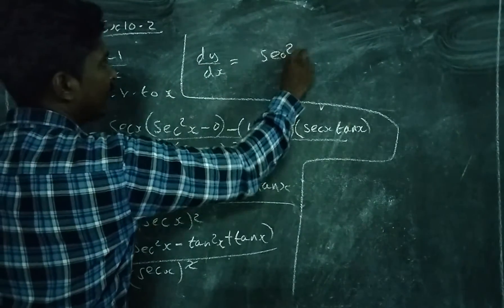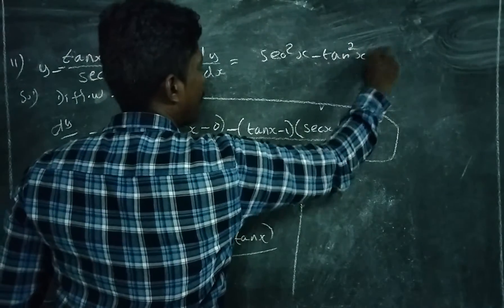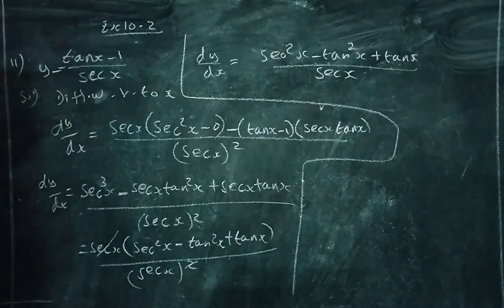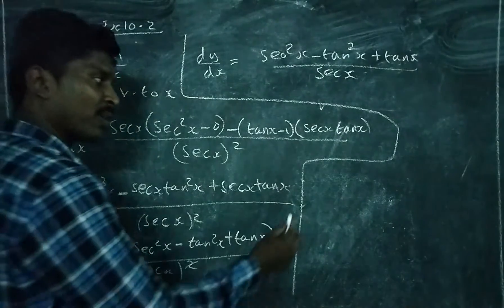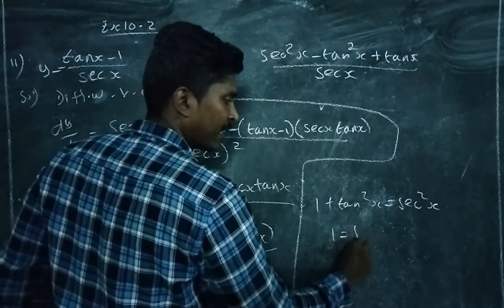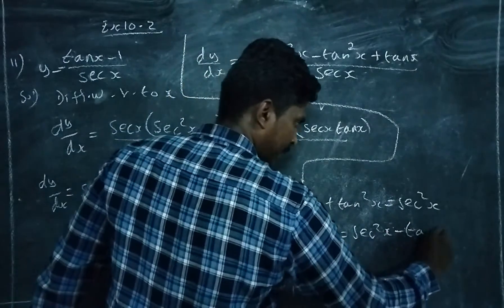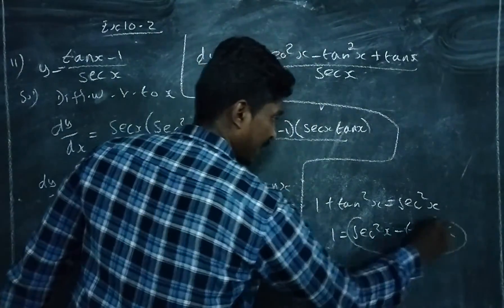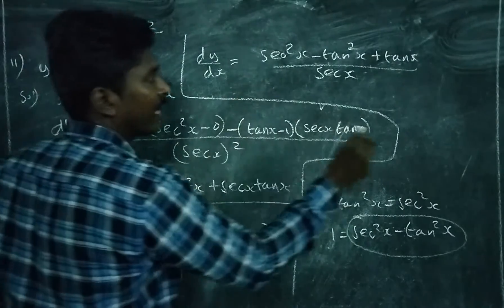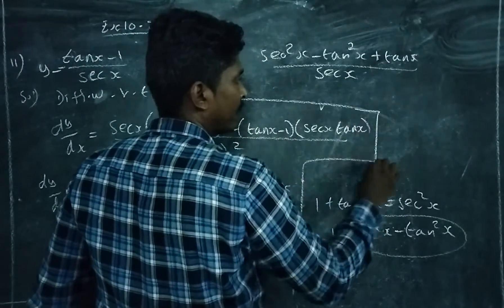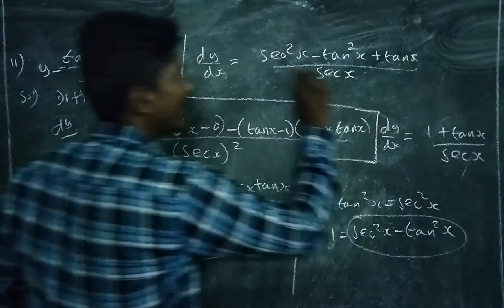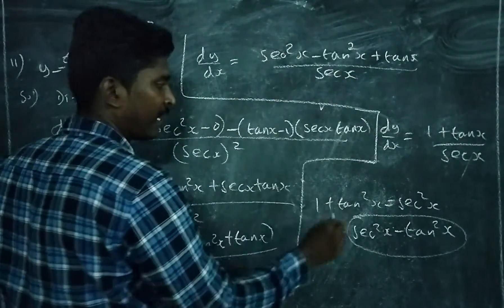Now apply the trigonometric identity: 1 plus tan squared x equals sec squared x. Rearranging gives sec squared x minus tan squared x equals 1. So replace sec squared x minus tan squared x with 1. Therefore dy by dx equals 1 plus tan x, divided by sec x.